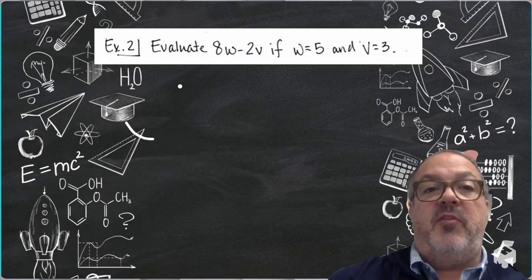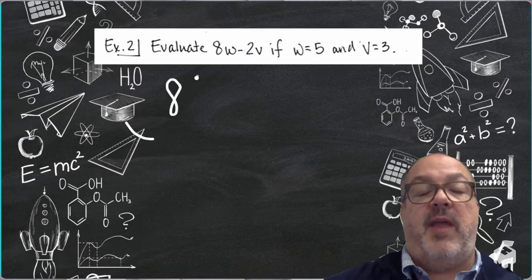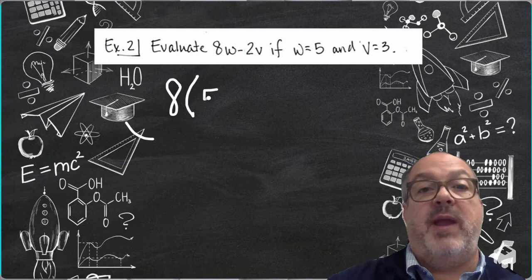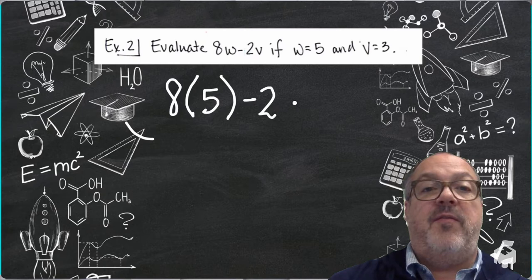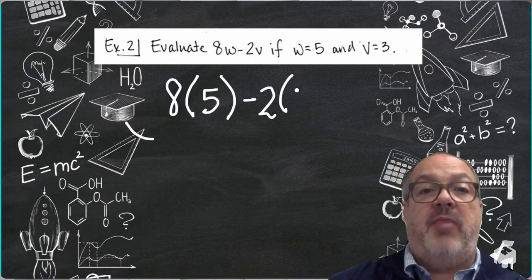In example 2, now we have two variables. So we have a w and a v. So I'm going to substitute 5 for my variable w and 3 for the variable v.